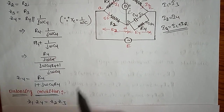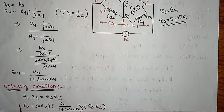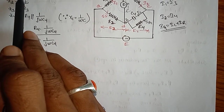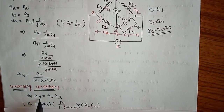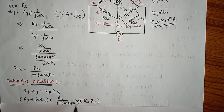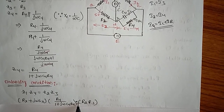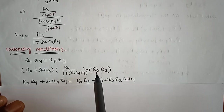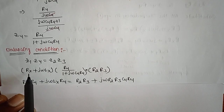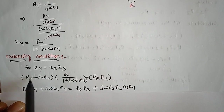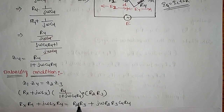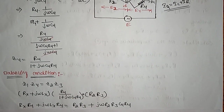Substituting: Z1 = Rx + jωLx, Z4 = R4/(1 + jωC4R4), and Z2 = R2, Z3 = R3. Multiplying out the equations gives: (Rx + jωLx) × R4 = R2 × R3 × (1 + jωC4R4), expanding to Rx·R4 + jωLx·R4 = R2·R3 + jω·C4·R2·R3·R4.